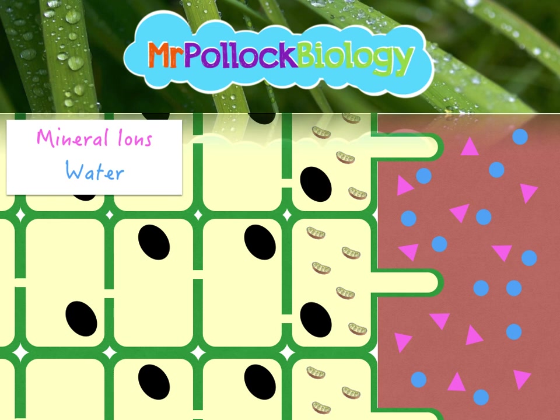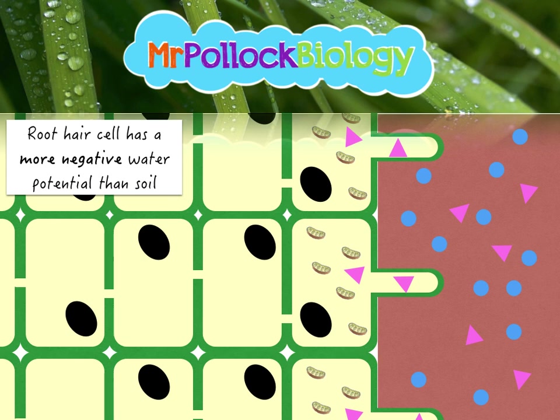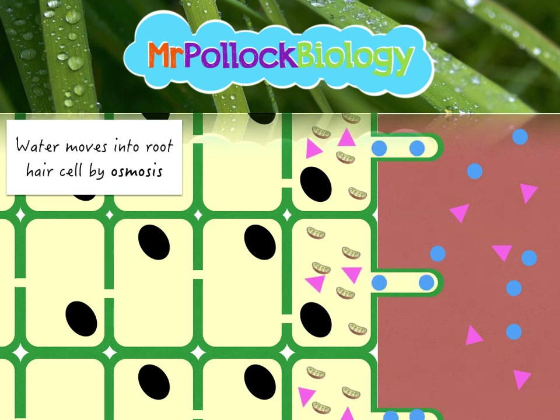In the soil, the pink triangles represent mineral ions and the blue circles are water molecules. The root hair cell cytoplasm has quite a few solutes already, giving it quite a negative water potential. If the plant didn't manipulate water potential, it would probably lose water into the soil. So what the plant does is actively transport mineral ions from the soil into the root hair, making the root hair cell's water potential more negative relative to the soil. That's where the mitochondria come in — providing the ATP to actively transport those mineral ions against a concentration gradient. Because of that movement, water moves into the root hair cell by osmosis.